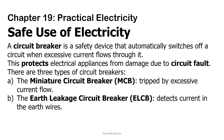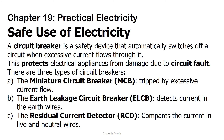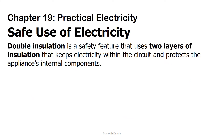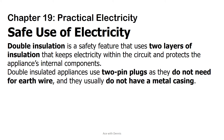B: the earth leakage circuit breaker, ELCB — it detects current in the earth wires. C: the residual current detector, RCD — it compares the current in the live and neutral wires. Double insulation is a safety feature that uses two layers of insulation to keep electricity within the circuit and protect the appliance's internal components. Double insulated appliances use two-pin plugs as they do not need an earth wire and they usually do not have a metal casing.